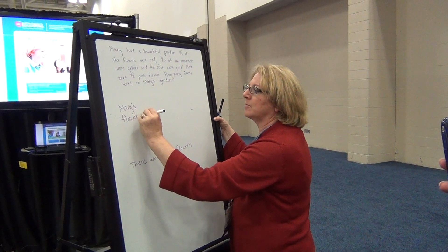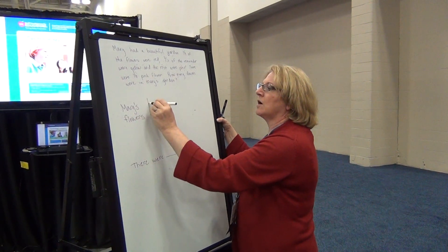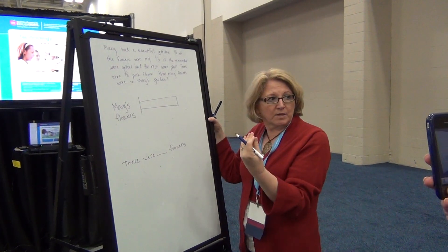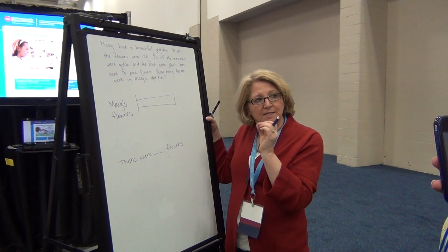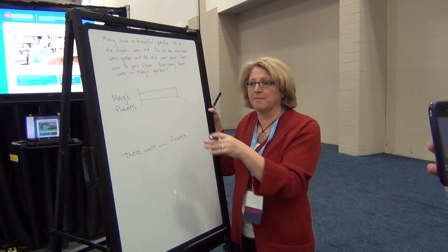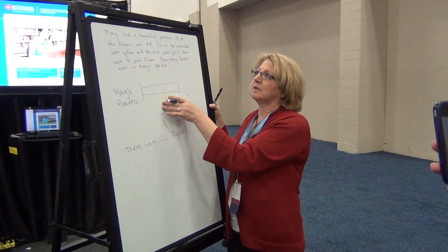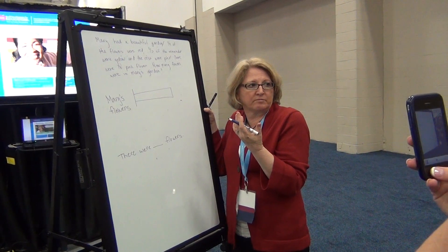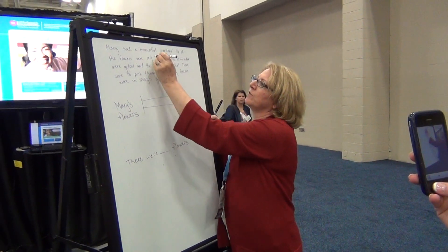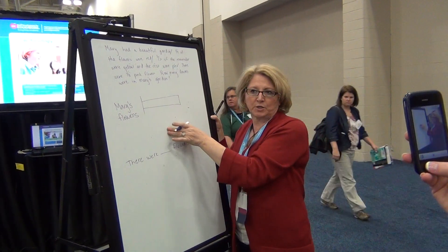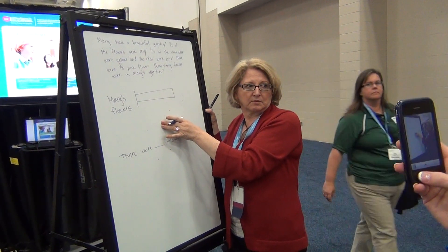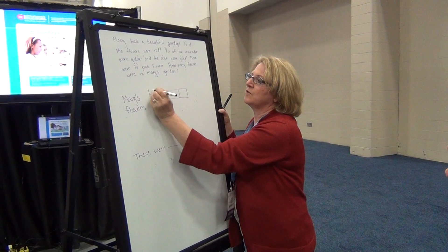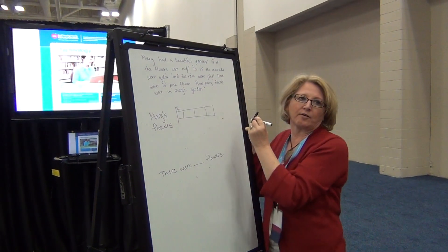I'm finding my variable. Then I draw a unit bar. Now I go back and I read the problem a second time. This time I read just one piece at a time, and I plug it into my model. Stop. 'Mary had a beautiful garden.' Stop. Any information in there? No. 'One-fourth of the flowers were red.' So what should I do with this? I'm going to divide it into fourths, and I know this piece right here is red, and I check it off.